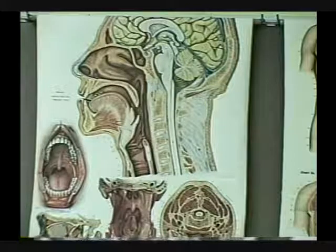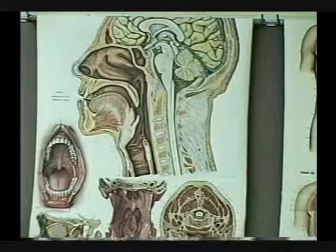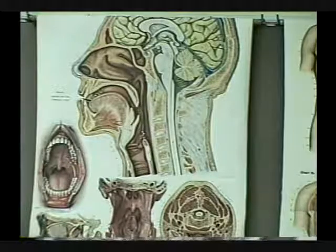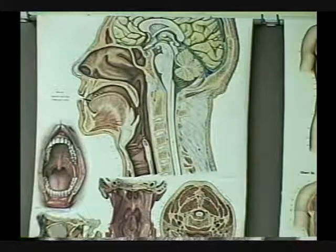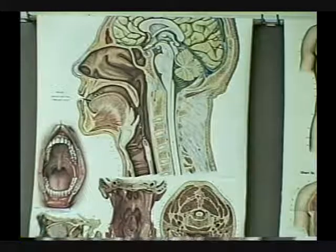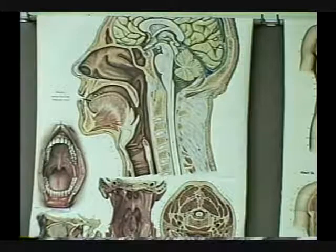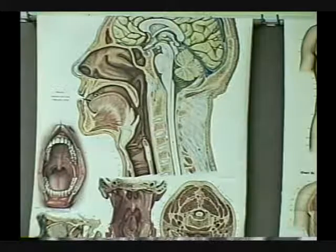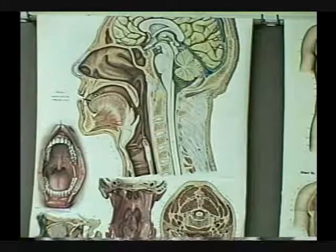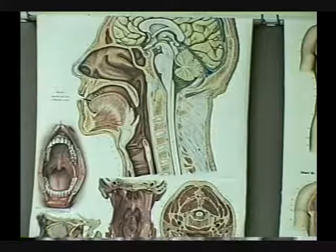Identify this cartilage: the epiglottis. Now identify this membrane — a tougher question. This is the aryepiglottic fold, which goes from the arytenoid cartilage up to the epiglottis. That's the edge of the aryepiglottic fold.